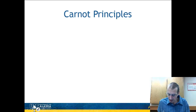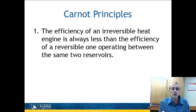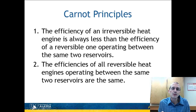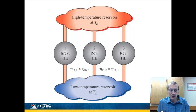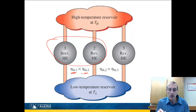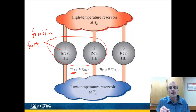There are two Carnot principles. The first is that the efficiency of an irreversible heat engine is always less than the efficiency of a reversible one operating between the same two reservoirs. An irreversible system — one with friction or operating very fast relative to its fluid — will have a lower efficiency. This is shown graphically: the irreversible heat engine has lower efficiency than the reversible one operating between the same reservoirs.